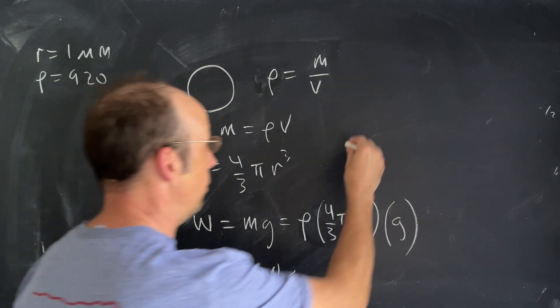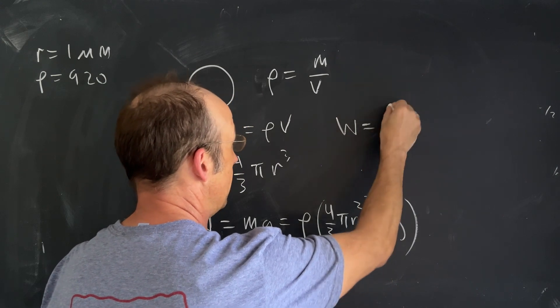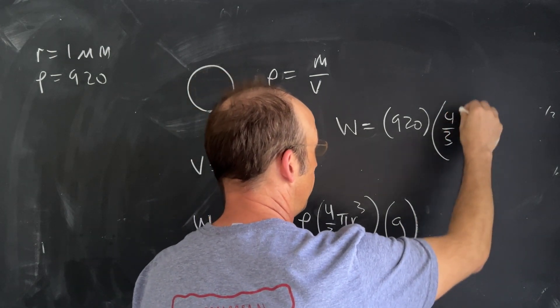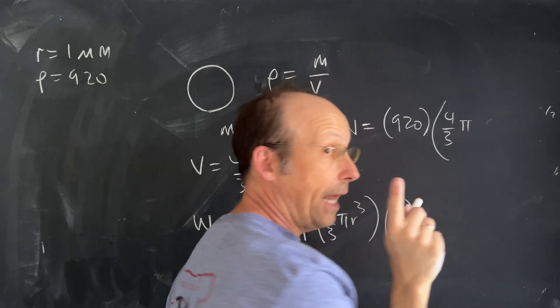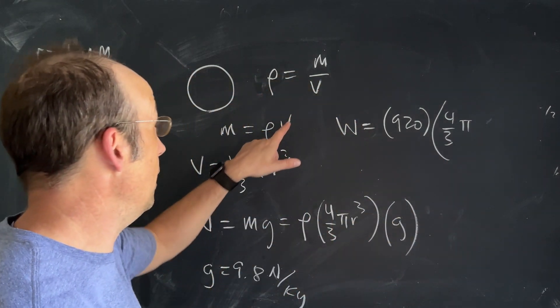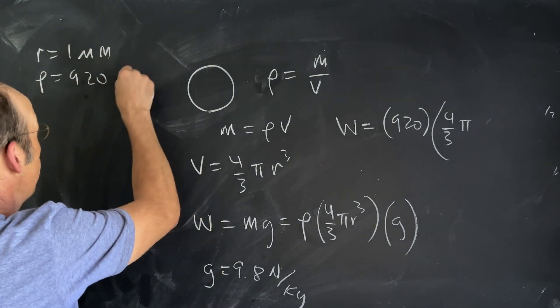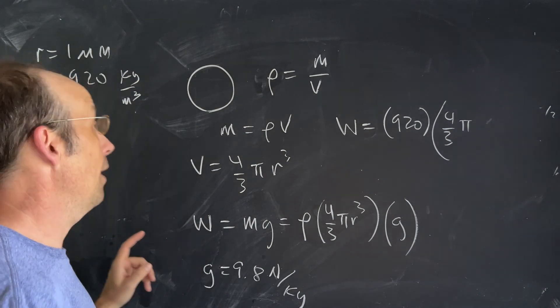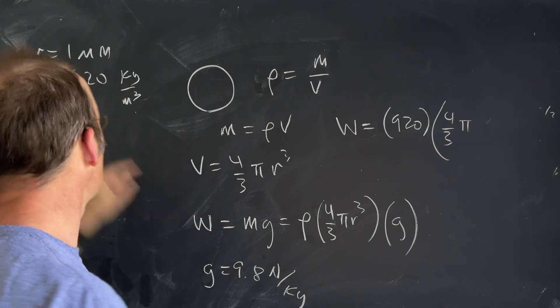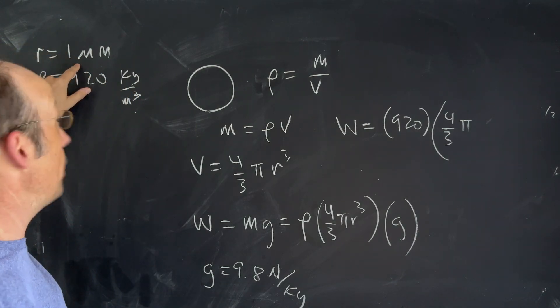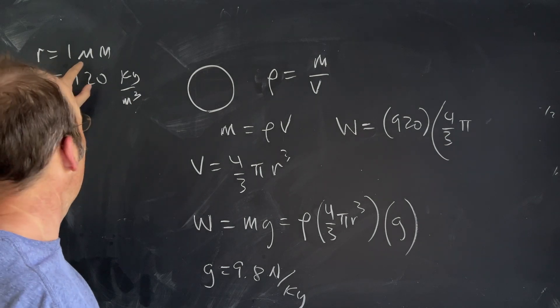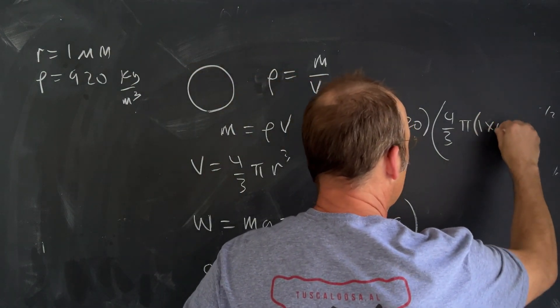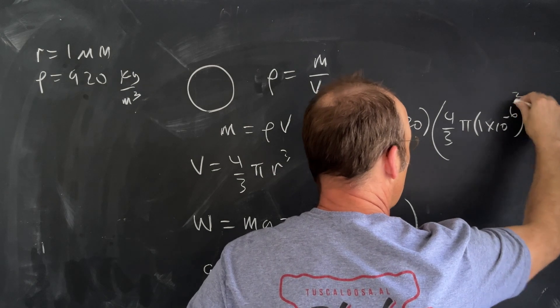Let's calculate that as a number. The weight is going to be the density 920 times four-thirds times π times the radius. I have the density in kilograms per cubic meter, so my volume needs to be in cubic meters. That means my radius needs to be in meters. One micrometer, the μ is 10 to the negative 6 meters. So this would be 1 times 10 to the negative 6 meters cubed.